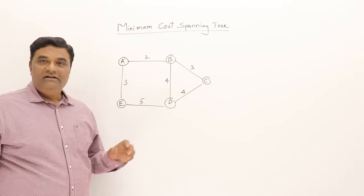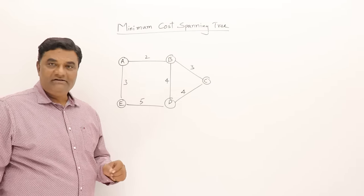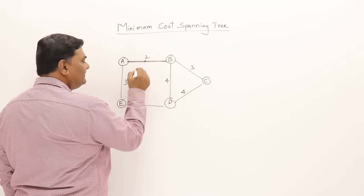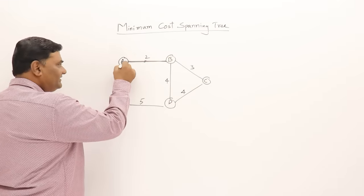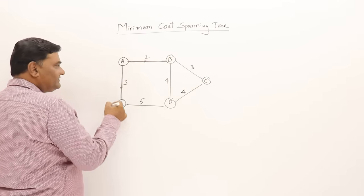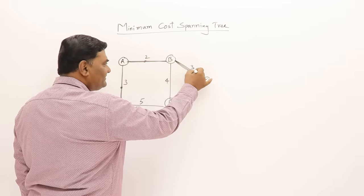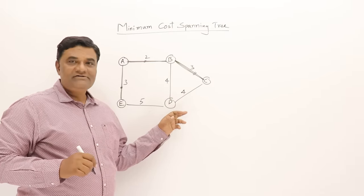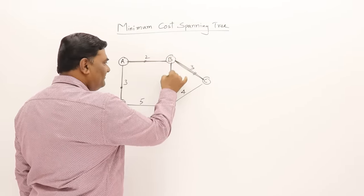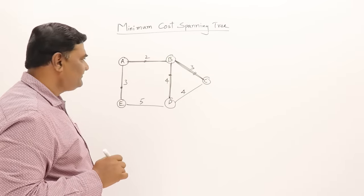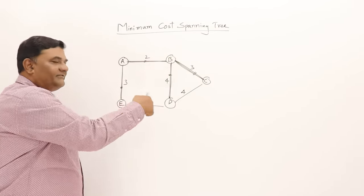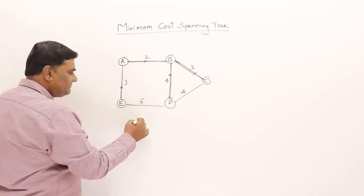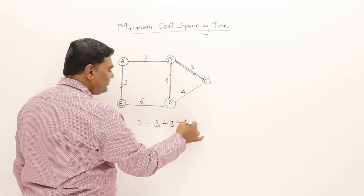Let's find the minimum cost spanning tree for a new example using Kruskal's method. First, select the minimum cost edge. Next minimum is 3 — there are two edges with weight 3, select one, then the other. No cycle is formed. Then edges with weight 4 — select one; it forms no cycle. Total edges selected: 4, and there are 5 vertices, so 4 edges gives a spanning tree. Cost is 2 plus 3 plus 3 plus 4, which equals 12.